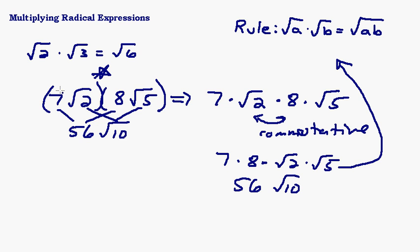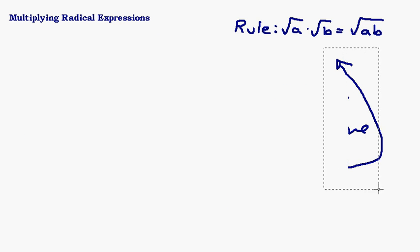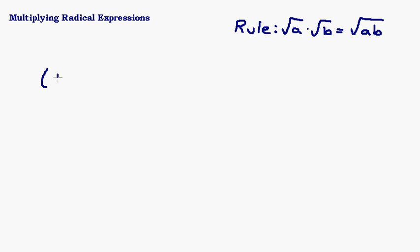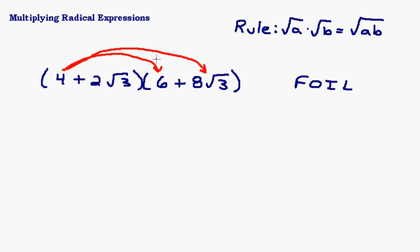Let's step it up a notch. Say we have a binomial times a binomial: (4 + 2√3)(6 + 8√3). We're going to approach this the exact same way we would do any binomial times a binomial — some of you may know it as FOIL, others as the distributive property, which are the same thing. I'm going to take the 4 and multiply it by each of the two terms in the second parentheses — that's the First and Outside terms in FOIL.